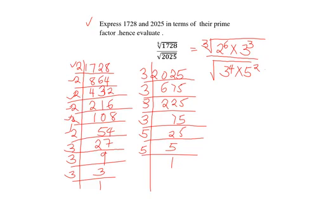Now in the next step, we apply the law of indices. We have 2 raised to 6 multiplied by 3 raised to 3, and this one should be raised to a third. That is the cube root, so we raise by a third.